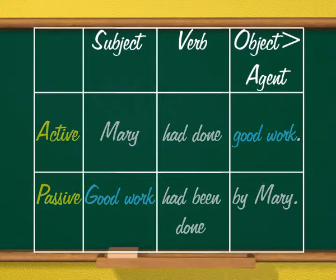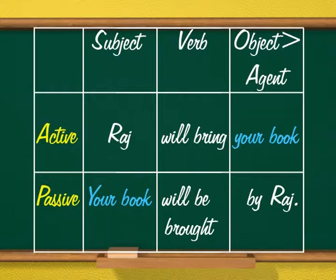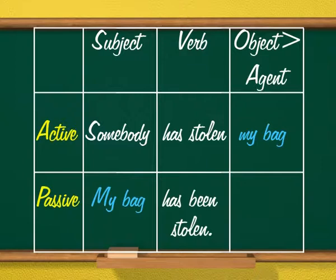Active: 'Raj will bring your book' — Raj is subject, will bring is verb, your book is object. Passive: 'Your book will be brought by Raj' — your book is subject, will be brought is verb, by Raj is agent. Active: 'Somebody has stolen my bag' — somebody is subject, has stolen is verb, my bag is object. Passive: 'My bag has been stolen' — my bag is subject, has been stolen is verb, and there is no object or agent here.